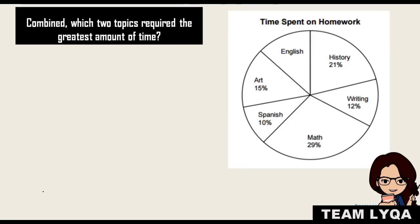So this is our sample. Here on the right side is our chart showing time spent on homework. Now, if you notice here, there are percentage equivalents for each slice of the pie. So again, the whole pie is 100. You have here 15, 10, 29, 12, 21. But English, if you notice, doesn't have a percentage.